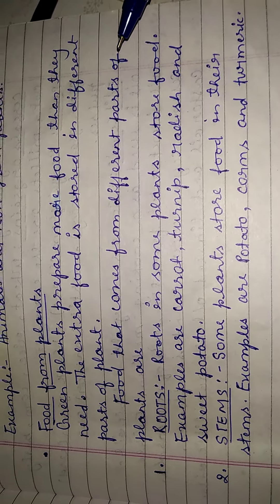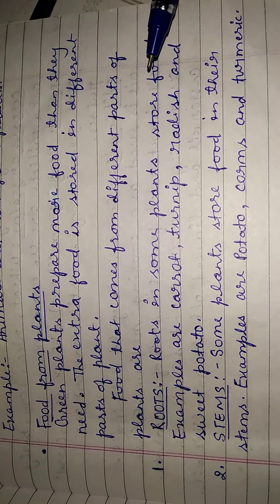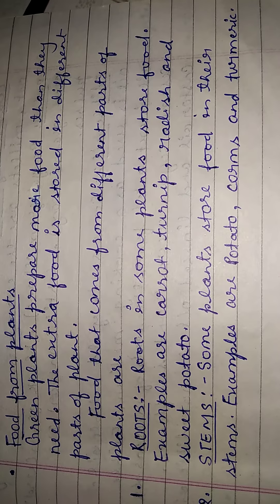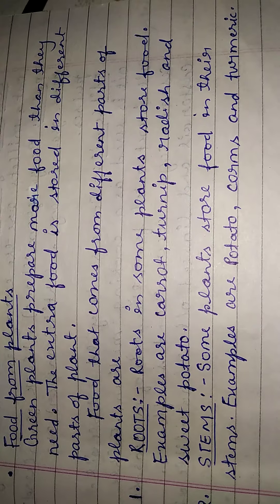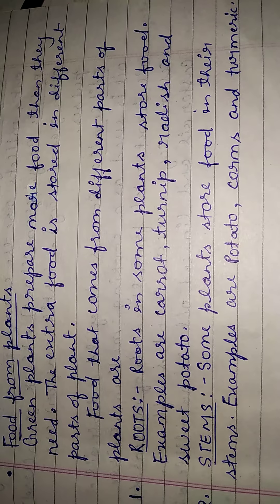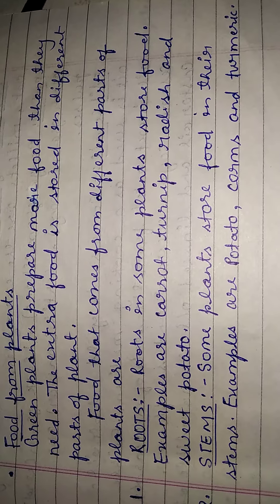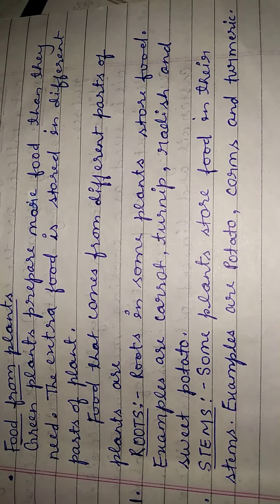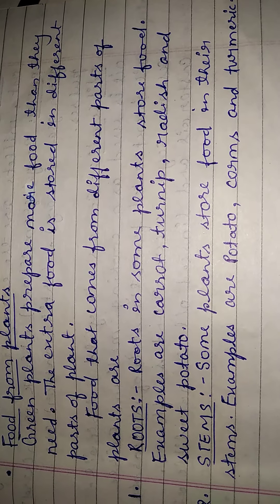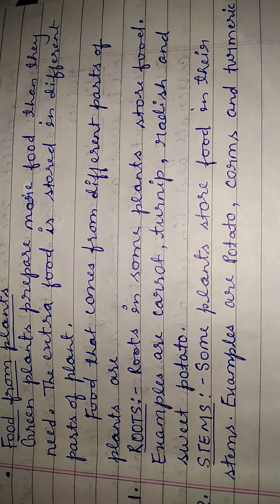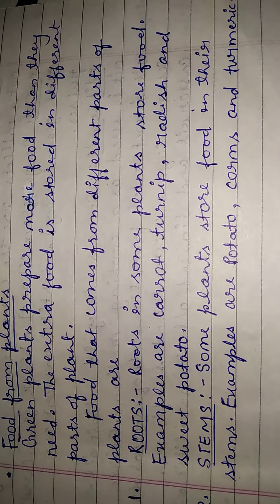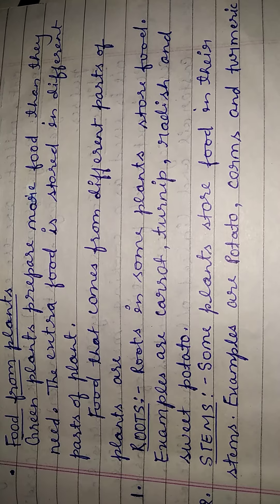The food comes from different parts of the plant. First, roots. Roots are the part of the plant that attach it to the soil and absorb water and minerals. But in some plants, roots perform special functions — they store food. For example, carrot, turnip, radish, and sweet potato are all examples of roots that store food.